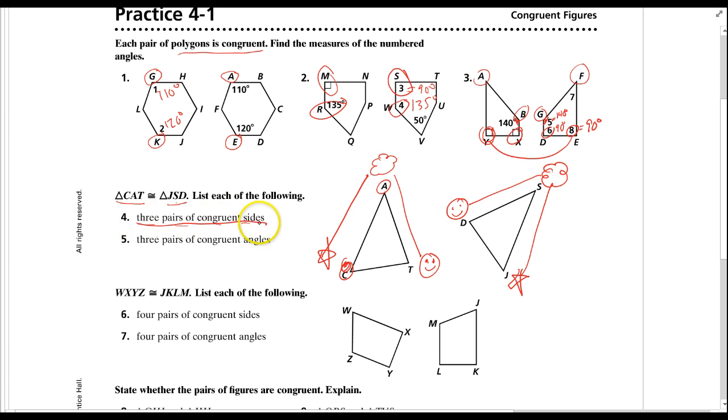So now to name three pairs of congruent sides, now I can see the order that they have to go in. So the side CA, from star to the cloud, we'll go with J, S. So there's one side. CA congruent to JS. Do you see how I'm labeling each of these segments with the segment line over the top? That's important. That's just one pair. Let's name two more. Well, I've got A to T, which is cloud to smiley face. So I start over here, cloud to smiley face, makes it S, D. So AT congruent to SD.